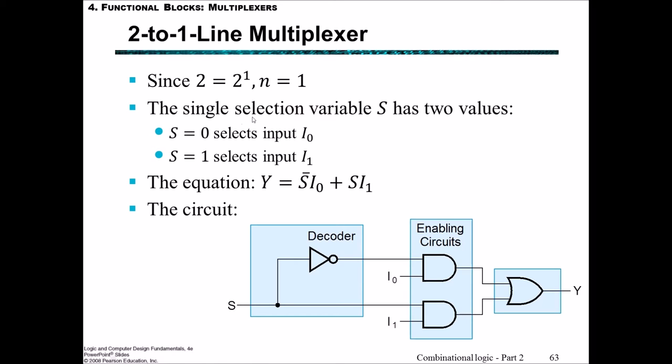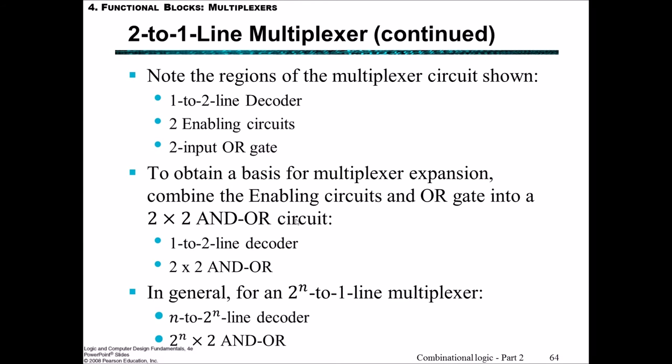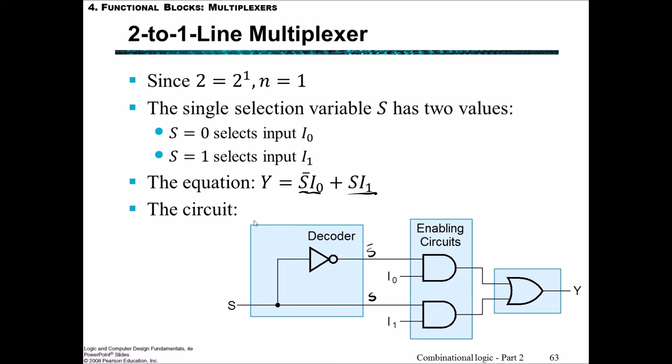In terms of the circuitry involved in this, since we have two inputs, I₀ and I₁, and we need one selection line, N equaling one, then we can use the decoder in order to have a single selection line outputting two values from the decoder, the S̄ and the S, and then combine it in ANDs in this way. So we have for the top one, S̄ and I₀ would be Y, combined with this OR gate at the end, S and I₁. Those first few points is saying, make sure you recognize the three parts to this, one being the decoder here, the next being the enabling circuits, and then finally the two input OR gate which combines it together.